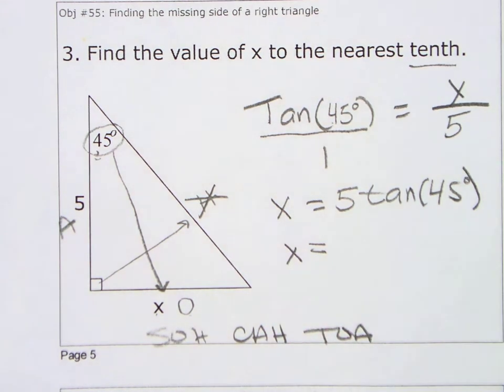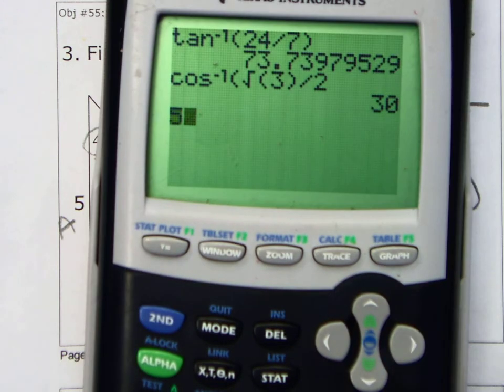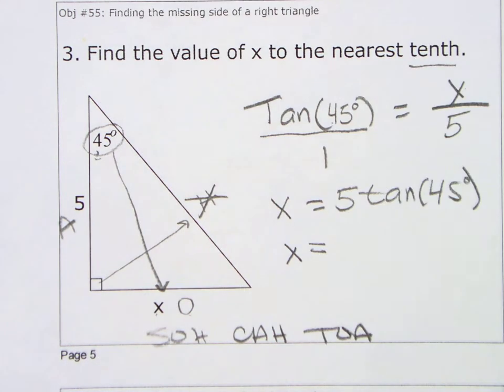5 tan of 45. And then the last thing I'm going to do is put it in the calculator. 5 tan of 45. You're going to be weirded out by this, is 5. Tan of 45 is 1, and that's why this happened. So the answer is 5.